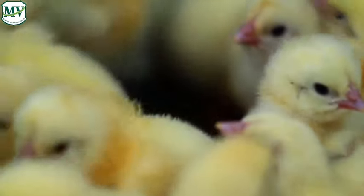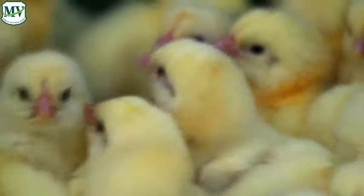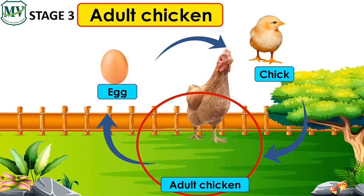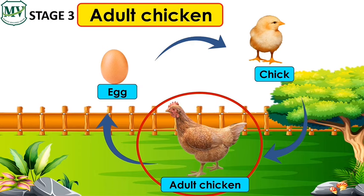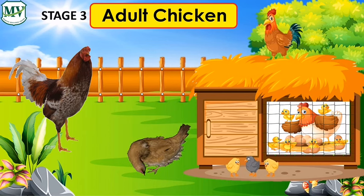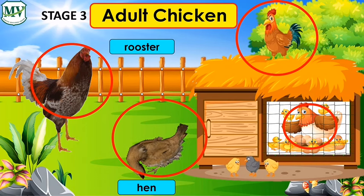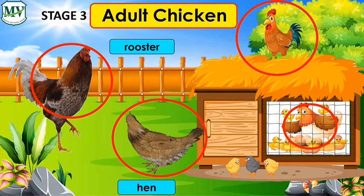Chicks are covered with tiny, soft, fluffy feathers to keep them warm. And lastly, the adult chicken. The chick grows up and changes over time into a chicken. A male chicken is called a rooster. A female chicken is called a hen. Only a hen can lay eggs.